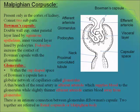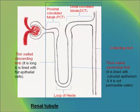A diagram of the renal tubule shows the thin-walled descending limb, the proximal convoluted tubule, the distal convoluted tubule, the loop of Henle, the collecting duct and the thick-walled ascending limb.